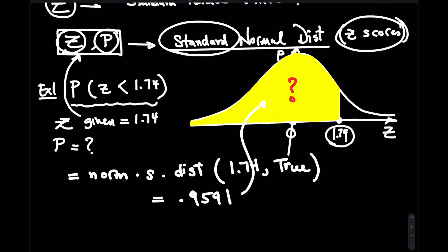To put it in a structured sentence: the probability that you'd be below 1.74 standard deviations above the mean in a normal distribution is 96%. Z scores represent the number of standard deviations from the mean. If a Z score is 5, you're 5 standard deviations above the mean. If the Z score is negative 2, you're two standard deviations below the mean, which is on the left side. So in Case 1, I gave you the Z score and asked you to find the probability, and you use the NORM.S.DIST command.